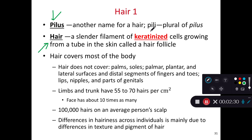We have a lot of keratinized cells in our hair and it grows in a tube. The tube itself is the hair follicle. This hair follicle is deep in the skin — it extends down through the epidermis, into the dermis of our skin.